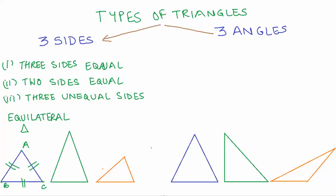The second triangle — let us call it triangle DEF. Sides DE and DF are of the same length, as indicated by the three bars, whereas EF is of a different length. This type of triangle which has two equal sides is known as an isosceles triangle.